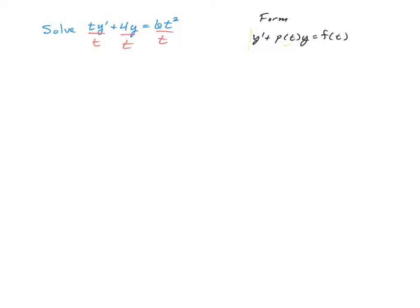And when we do that, we end up now with just plain y prime plus the coefficient 4 over t times y is equal to just 6 times t. And now we have a coefficient function. You'll notice I put parentheses around it because that helps us identify it and keep it off to the side. So now this is what we're going to use when we build our integrating factor.